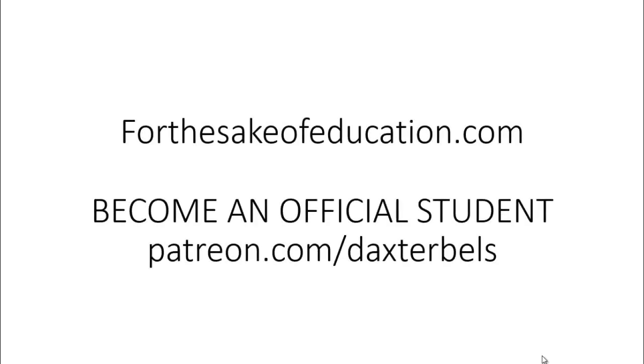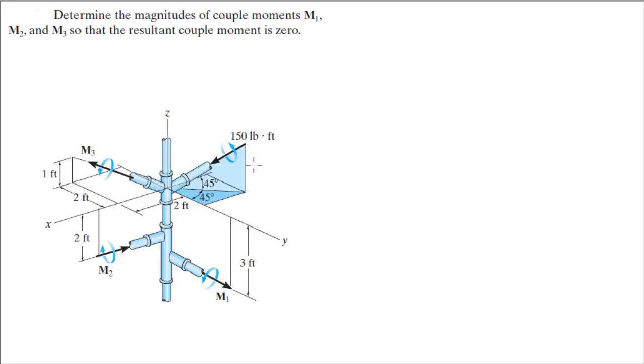For more videos visit ForTheSakeOfEducation.com or support me at patreon.com/DaxterBells. Alright guys, let's do this last problem for the day where they want you to determine the magnitudes of the couple moments M1, M2, and M3 so that the resultant couple moment is zero. Basically what we're going to do is find the Cartesian vector form of all these moments and build some equations. When we build those equations, we'll just solve them. That's going to be our strategy.